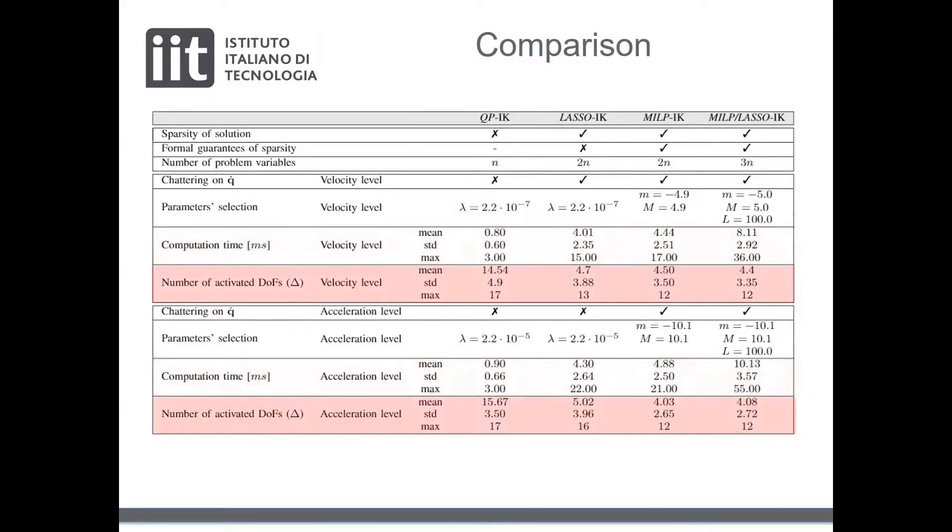Finally, we can see that the mean of used variables to achieve the motion is dramatically decreased from 15 of the L2 norm to 4 of the MILP-based sparse approaches.